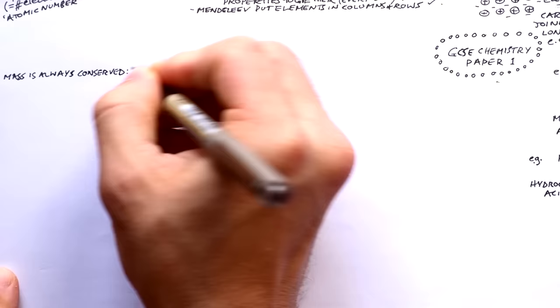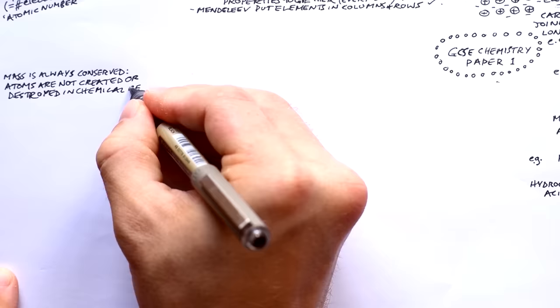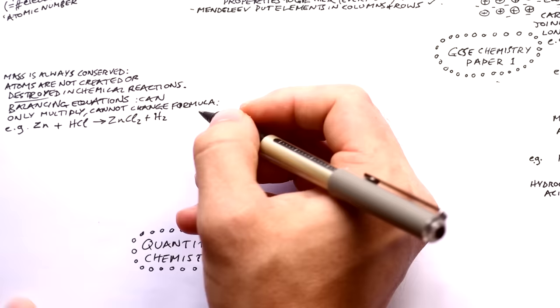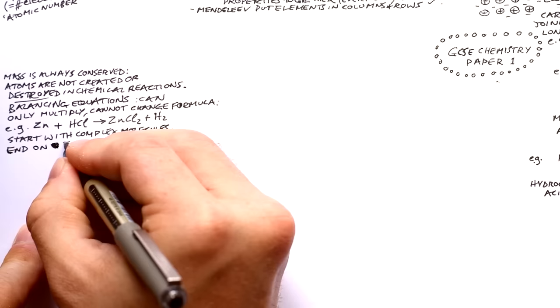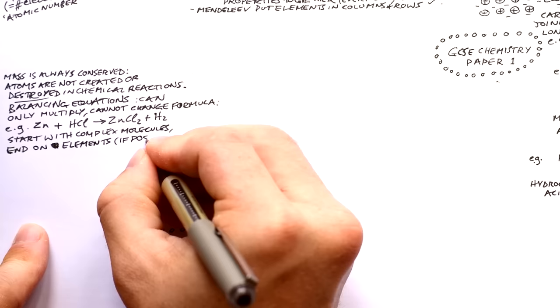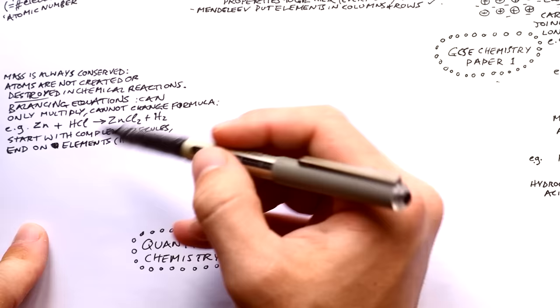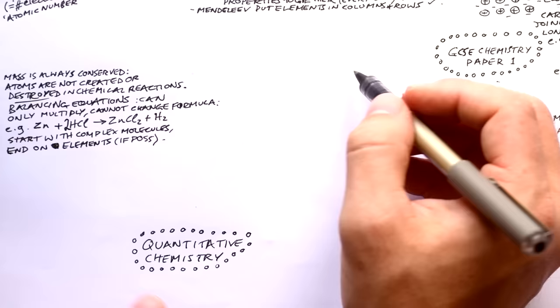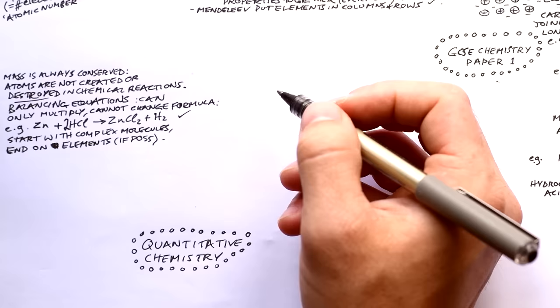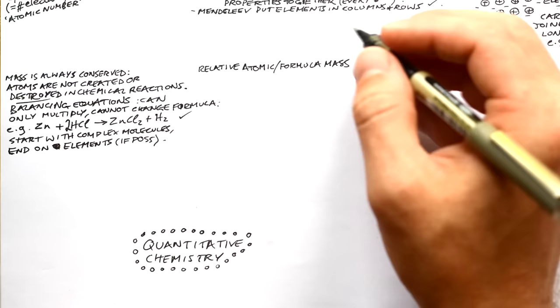Now for quantitative chemistry. Mass is always conserved — atoms are not created or destroyed in chemical reactions. We must balance equations. Take zinc and hydrochloric acid making zinc chloride and hydrogen: there's only one chlorine on the left but two on the right. We can't change the formulae of molecules, so we put a number in front — put 2 in front of HCl. Now we have two chlorines and two hydrogens on the left, which matches the H₂ on the right.